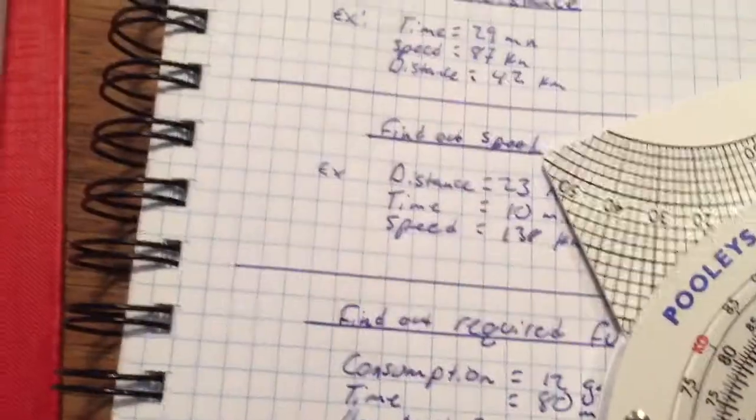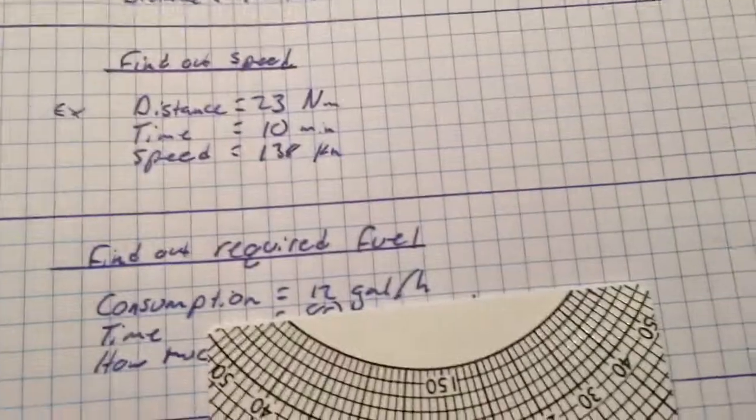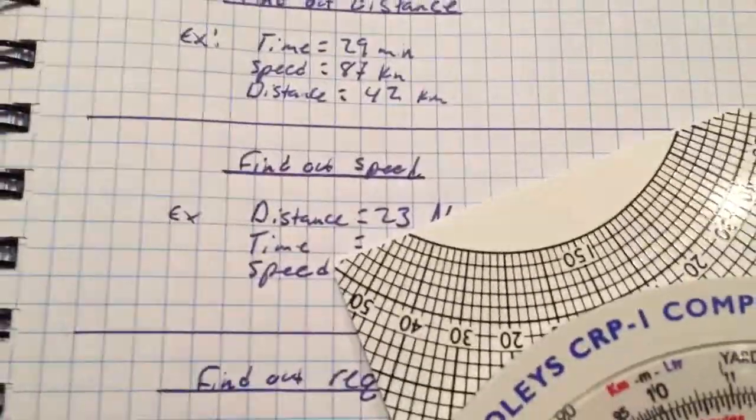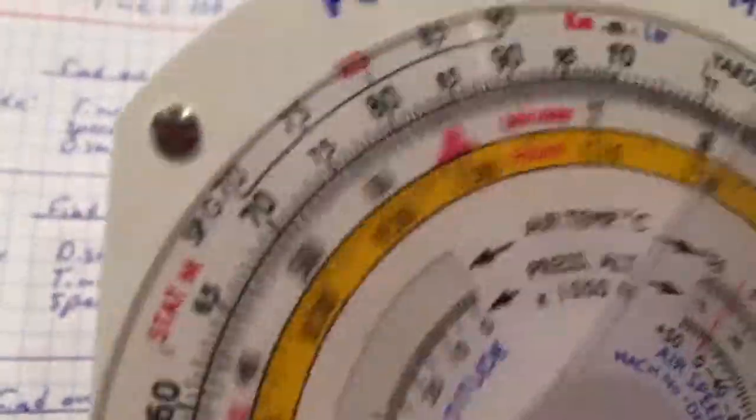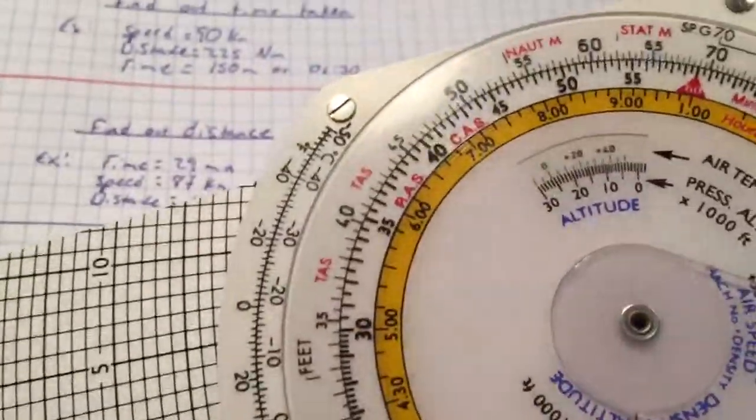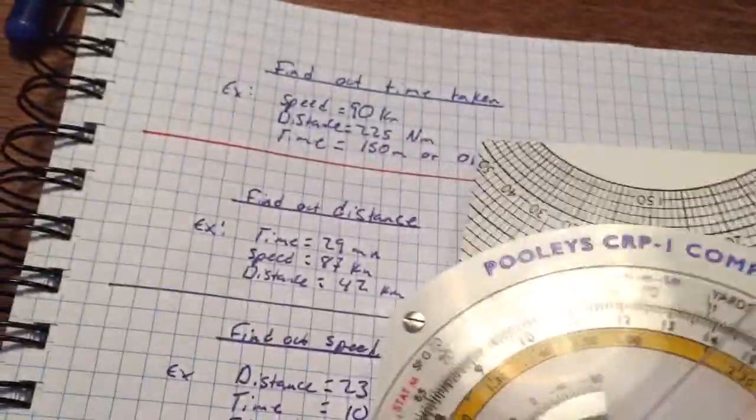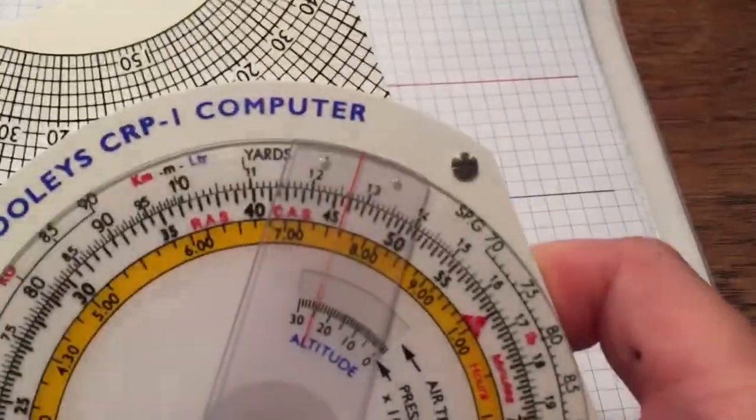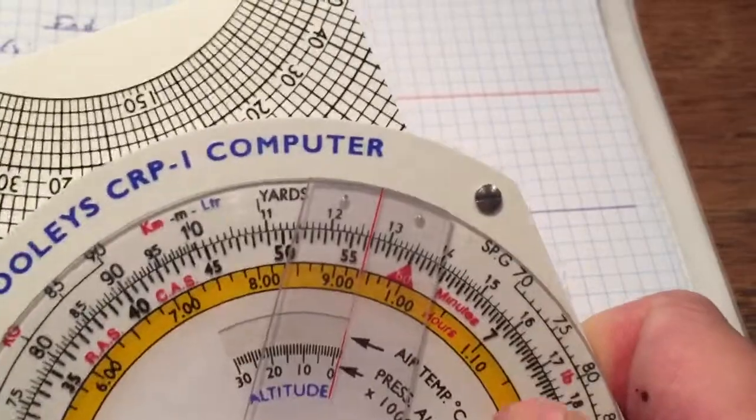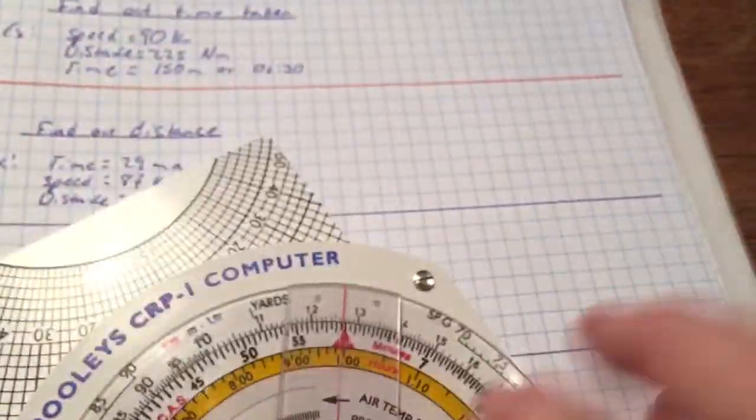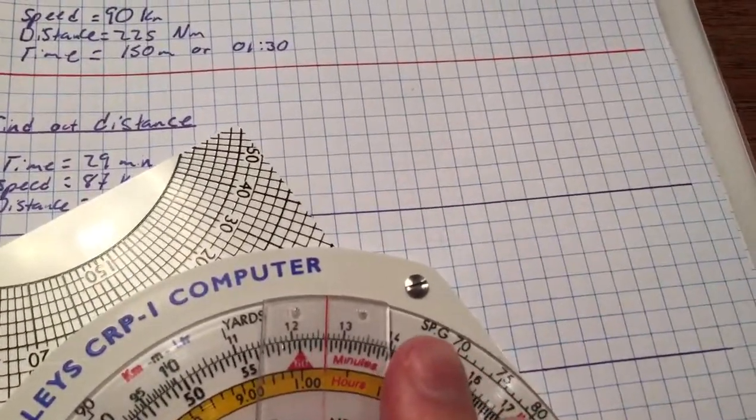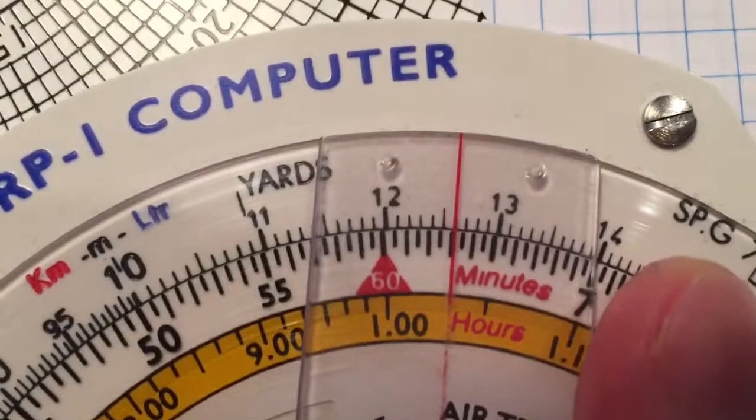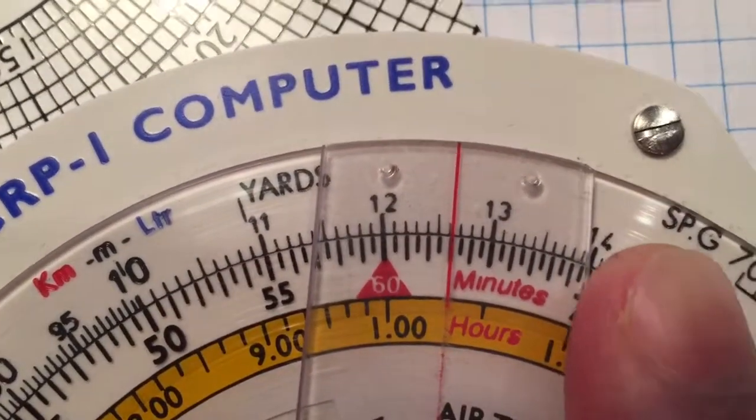So the consumption, if we have the consumption, it makes it look the easiest for us because it says it's 12 gallons per hour. So there we can set the index marker here for 12, which is all the way around the other side here. And there.